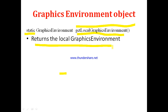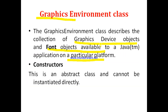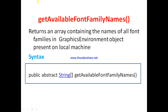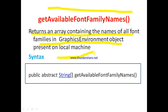With the help of this Graphics Environment object, as we discussed, we can return all the fonts, objects, and all the font families present in the object. Now, let us see the methods of Graphics Environment class. The first method is getAvailableFontFamilyNames. This method returns an array containing the names of all font families present in the Graphics Environment object, which is usually on the local machine. All the names of font families will be returned by this method, and since it returns more than one value, it returns an array.